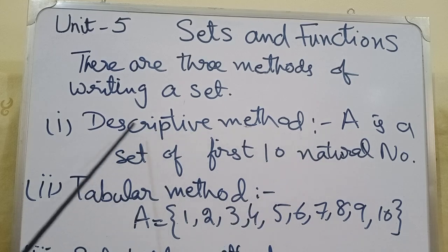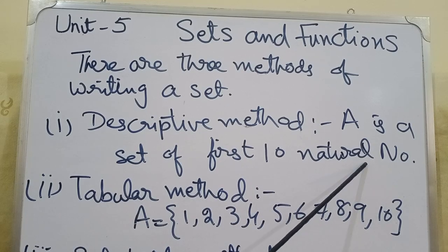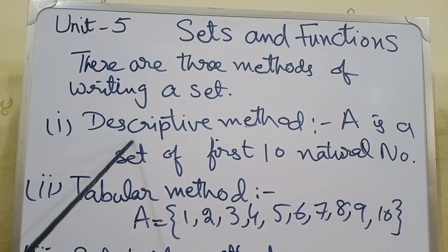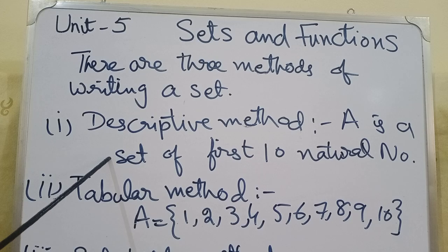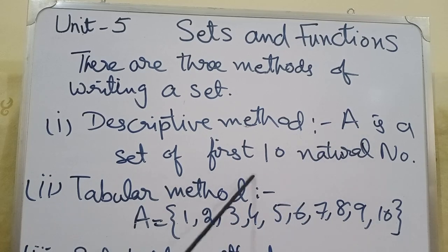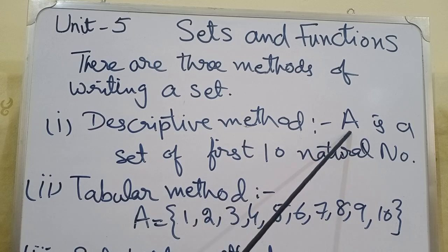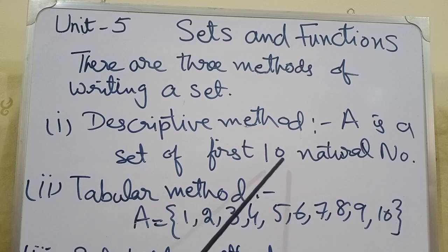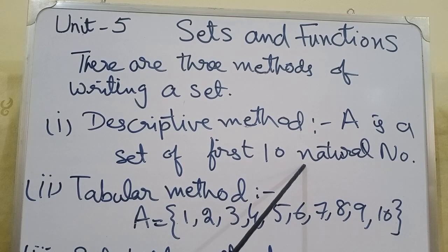The first method is the Descriptive method. For example: 'A is a set of first 10 natural numbers.' As the name describes, in this form a set is described in a statement. This statement shows us all the numbers of set A — in other words, the first 10 natural numbers are the elements, or members, of set A. So it is a statement but represents a complete set.